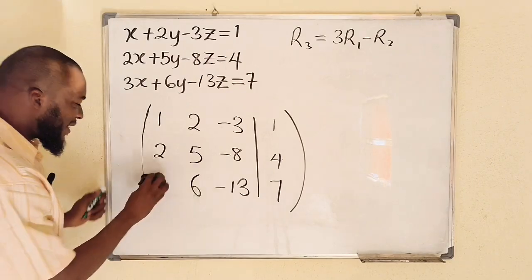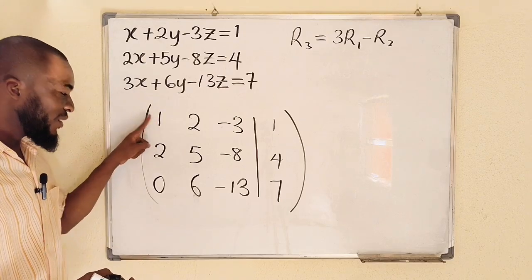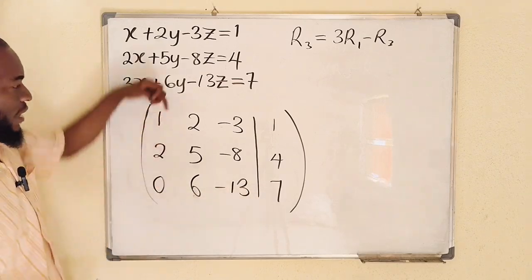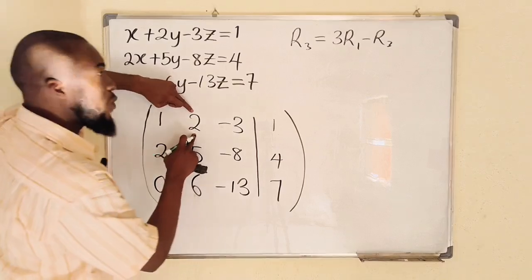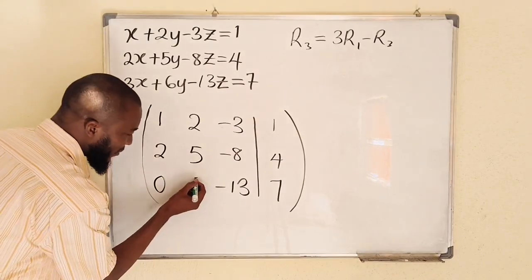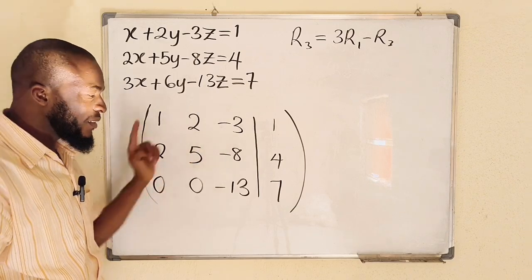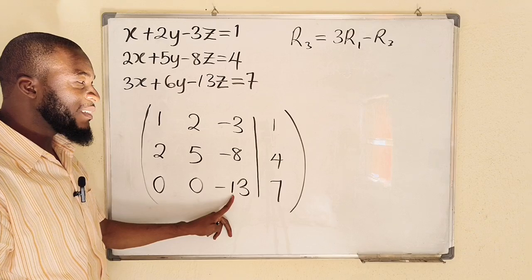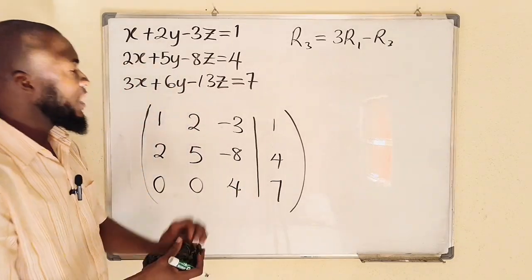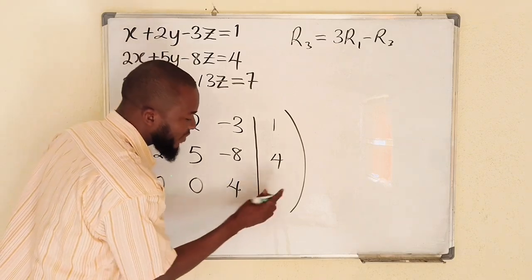So the first entry becomes zero. For the next entry: 2 times 3 is 6, and 6 minus 6 gives zero. For z: 3 times negative 3 is negative 9, and negative 9 minus negative 13 is negative 9 plus 13, which equals positive 4. For the right-hand side constant: 3 times 1 is 3, and 3 minus 7 is negative 4. So the new Row 3 is: 0, 0, 4, negative 4.